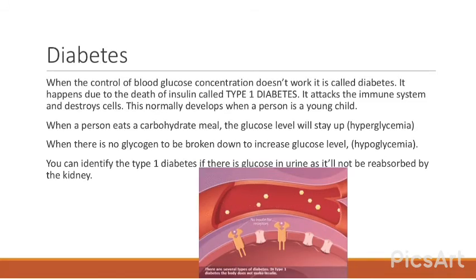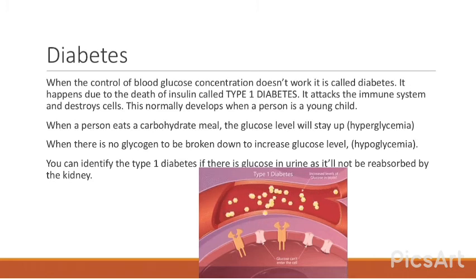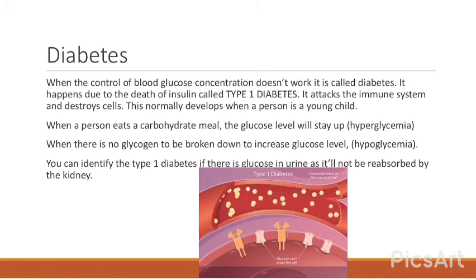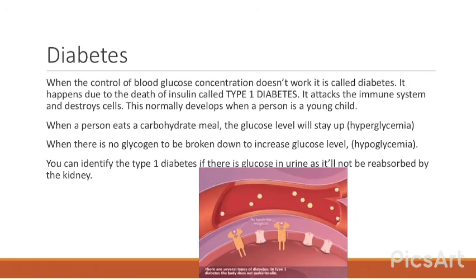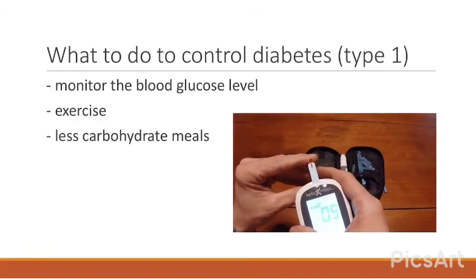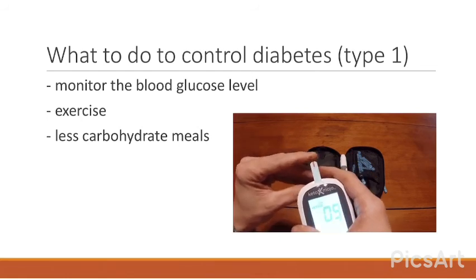Diabetes occurs when the control of blood glucose concentration fails. Type 1 diabetes happens due to the immune system attacking and destroying the insulin-producing cells; it normally develops in young children. After a carbohydrate meal, glucose levels stay high — called hyperglycemia. When no glycogen is available to raise glucose levels, it is called hypoglycemia. Glucose appears in the urine as it is not reabsorbed by the kidneys. Symptoms include extreme thirst, tiredness, blurred vision, weight loss, and loss of consciousness. To control Type 1 diabetes: monitor blood glucose levels, exercise, and eat fewer carbohydrates.